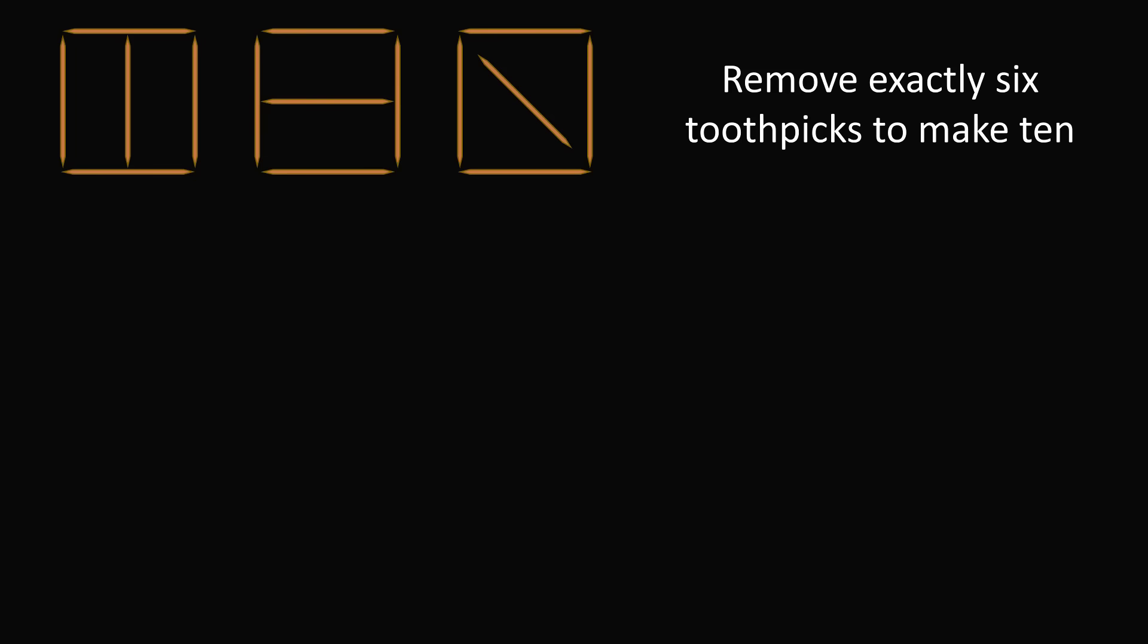So, there's more than one way to solve this puzzle. To make the number 10, you could remove these 6 toothpicks. If you did that, you would end up with the numbers 0, 1, and 0, which, of course, is equal to 10.